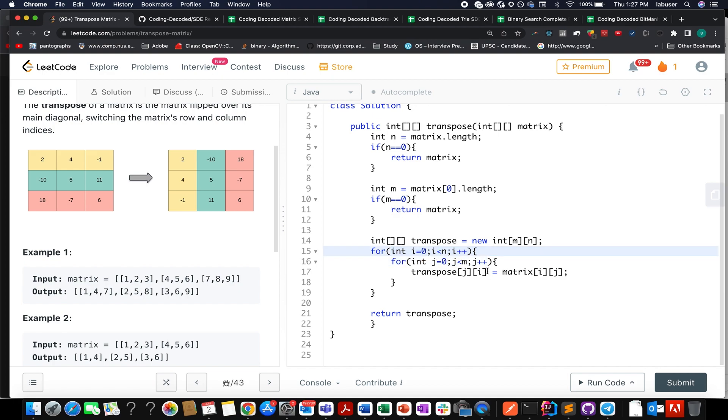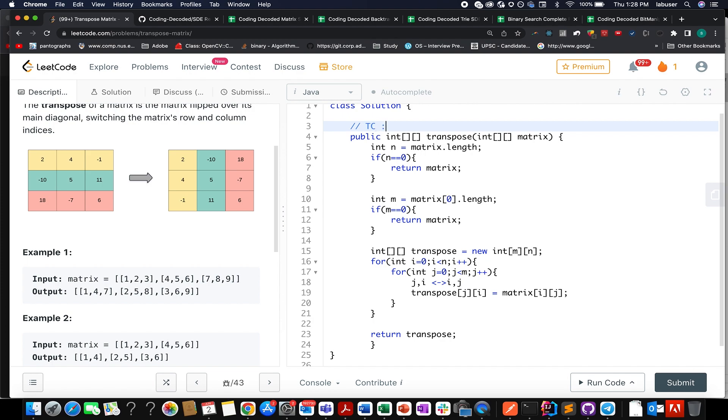The interesting part here is that you are transposing j, i equals to matrix of i, j. So whatever i, j exists in your initial matrix gets updated as j, i in your output matrix. So this is what we need to do: j is getting replaced by i and i is getting replaced by j. In the end, you simply return the transpose matrix and we are done with the operation. The time complexity of this approach, that I have already told, is order of n into m.